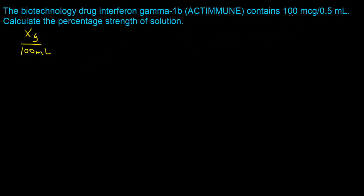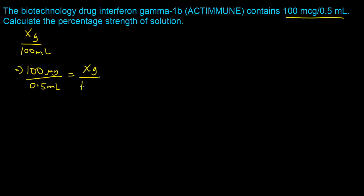The first thing we need to do is take the given concentration and express it so that we have some amount of grams in 100 milliliters. We start with 100 micrograms in 0.5 milliliters and set up a proportion asking how many grams will be in 100 milliliters — that is the definition of percentage concentration, and once we solve for x, that will be the percentage.